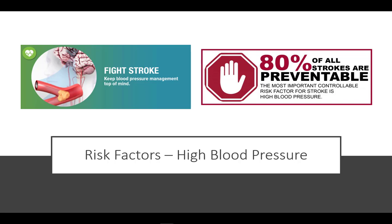High blood pressure is the leading cause of stroke, causing more than half of all strokes. Experts say that 80% of strokes can be prevented, and the single best way to prevent a stroke is to get your blood pressure down to 120 over 80 or less. Hypertension puts your arteries under constant stress, and too much force inside your blood vessels can weaken them over time. Chronic hypertension can increase the risk for both ischemic and hemorrhagic stroke.